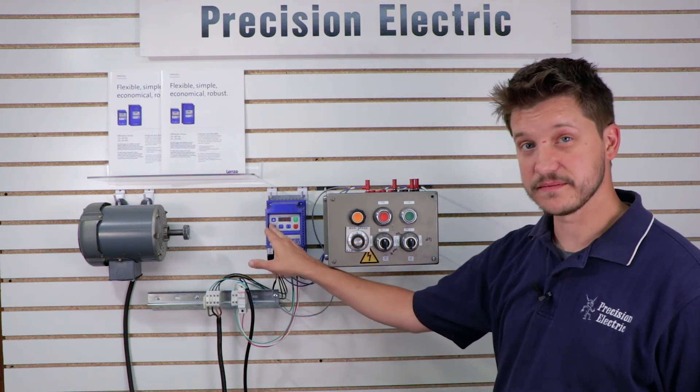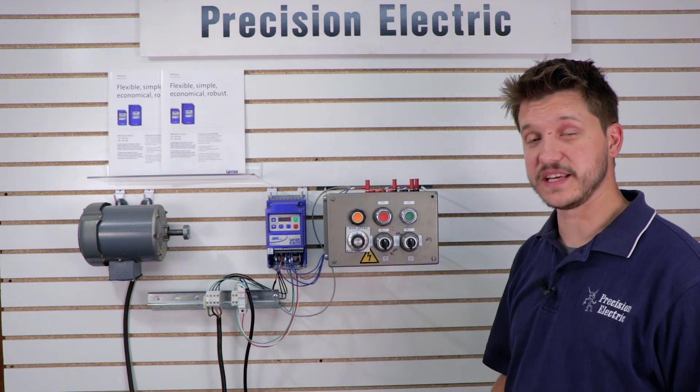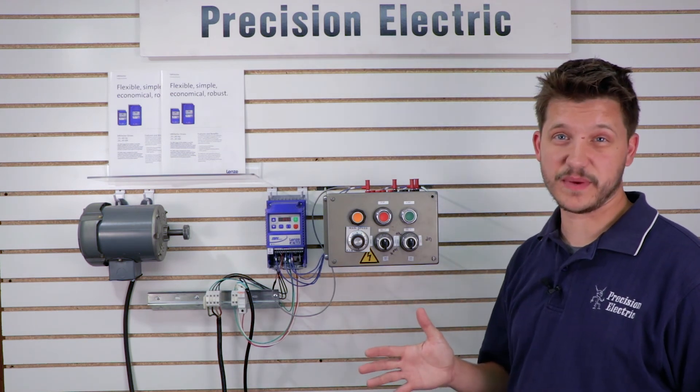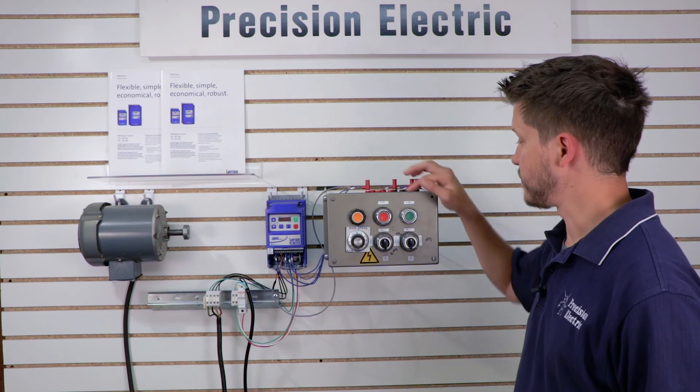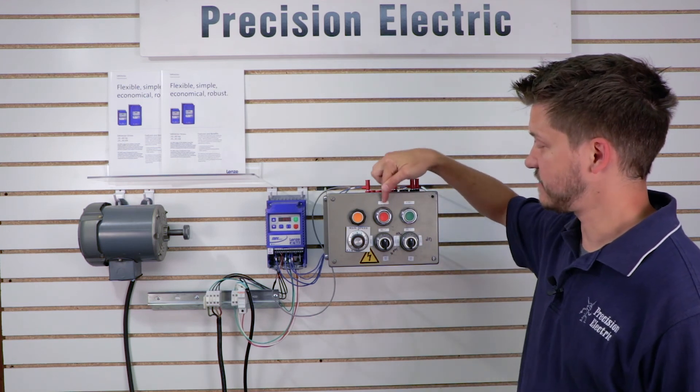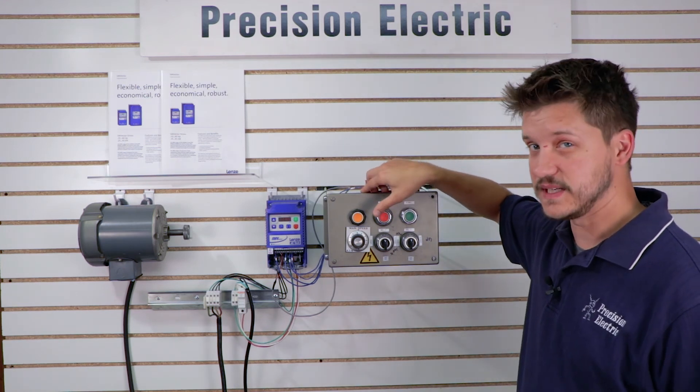By default, it's set to the keypad, so I can actually turn it up and down at the keypad, if it's set up right out of the box to do that. My second option is my stop button that we wired. It stops when I press it.